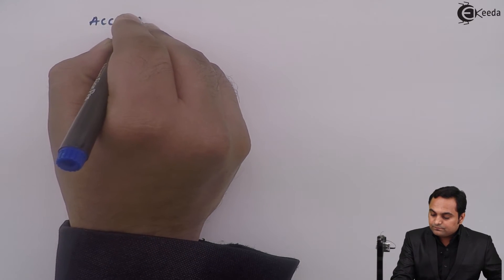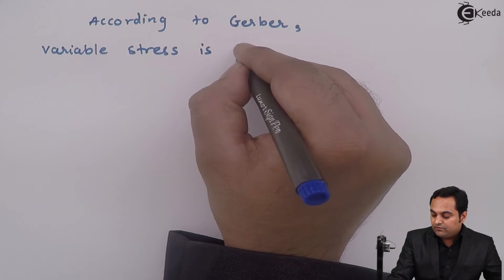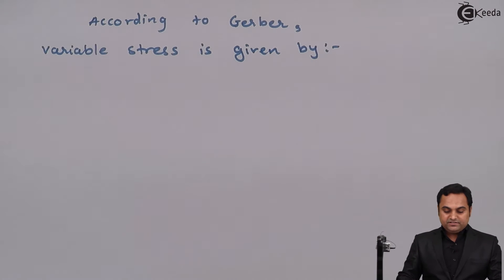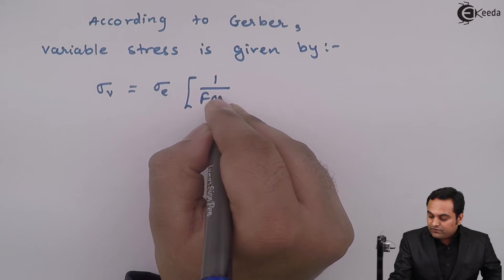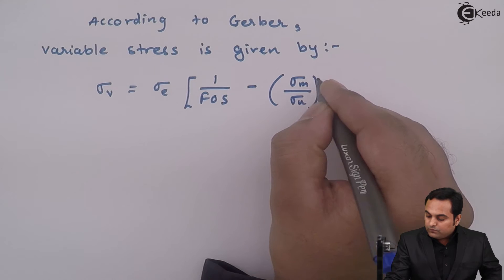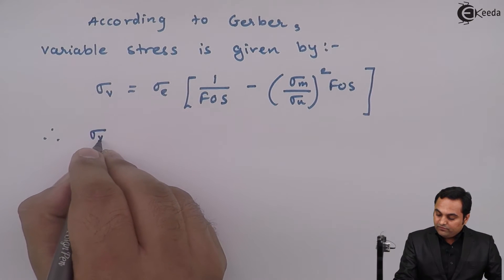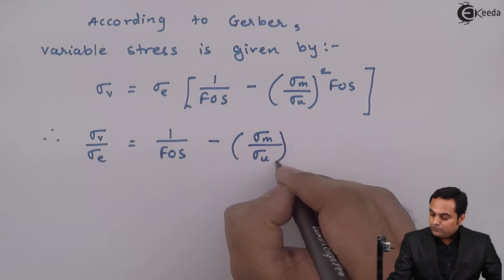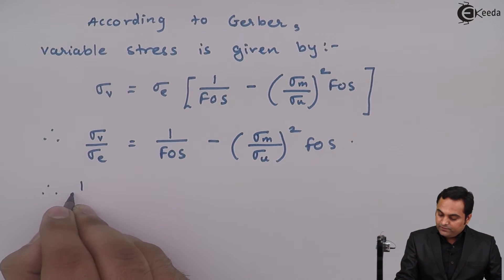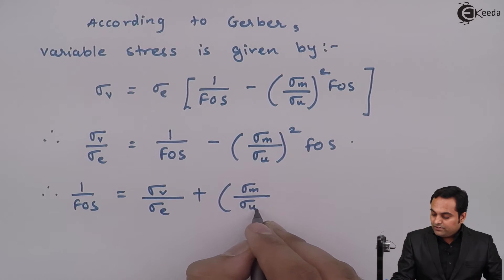According to Gerber, the variable stress formula is: Sigma V equals Sigma E multiplied by one over the factor of safety minus Sigma M over Sigma U, whole squared times the factor of safety. Simplifying, Sigma V over Sigma E equals one over FOS minus (Sigma M over Sigma U) squared times FOS. Rearranging: one over FOS equals Sigma V over Sigma E plus (Sigma M over Sigma U) squared times FOS.